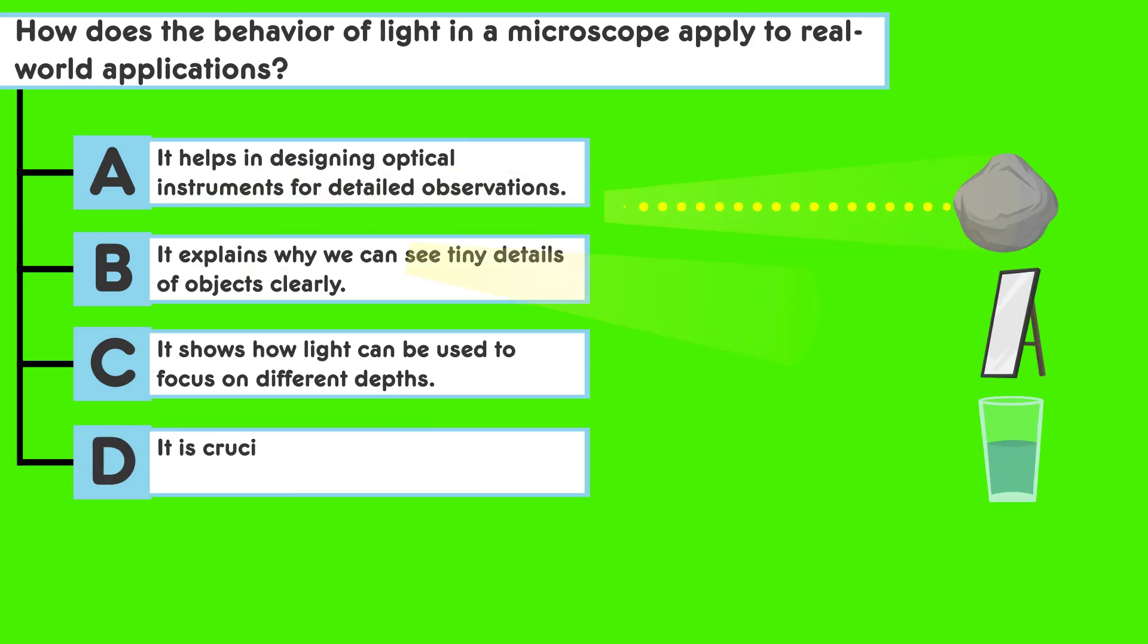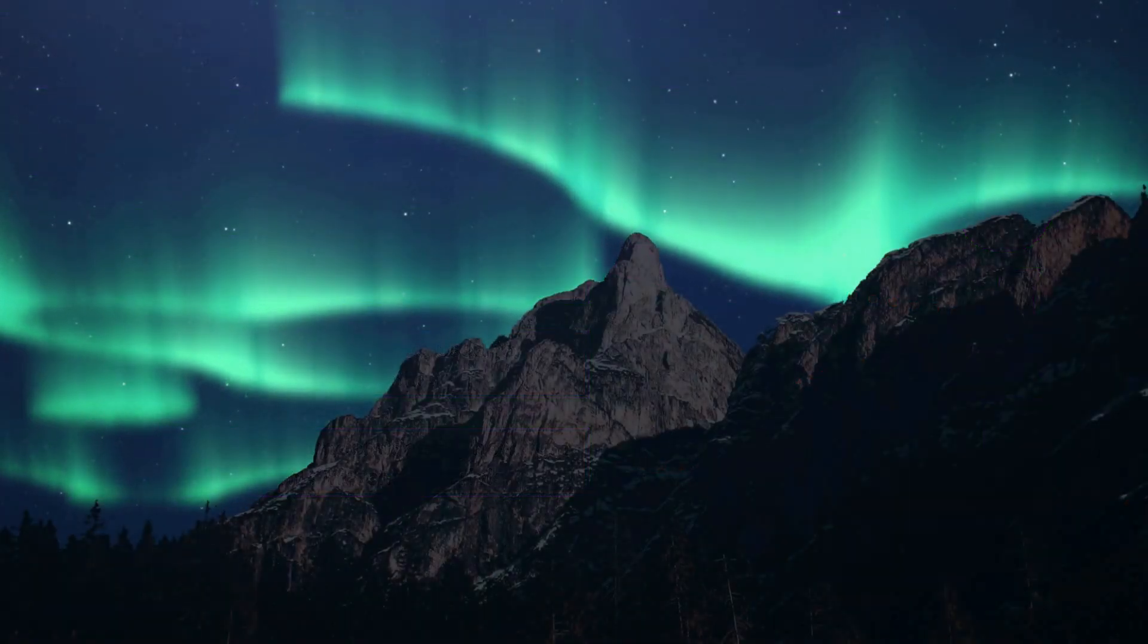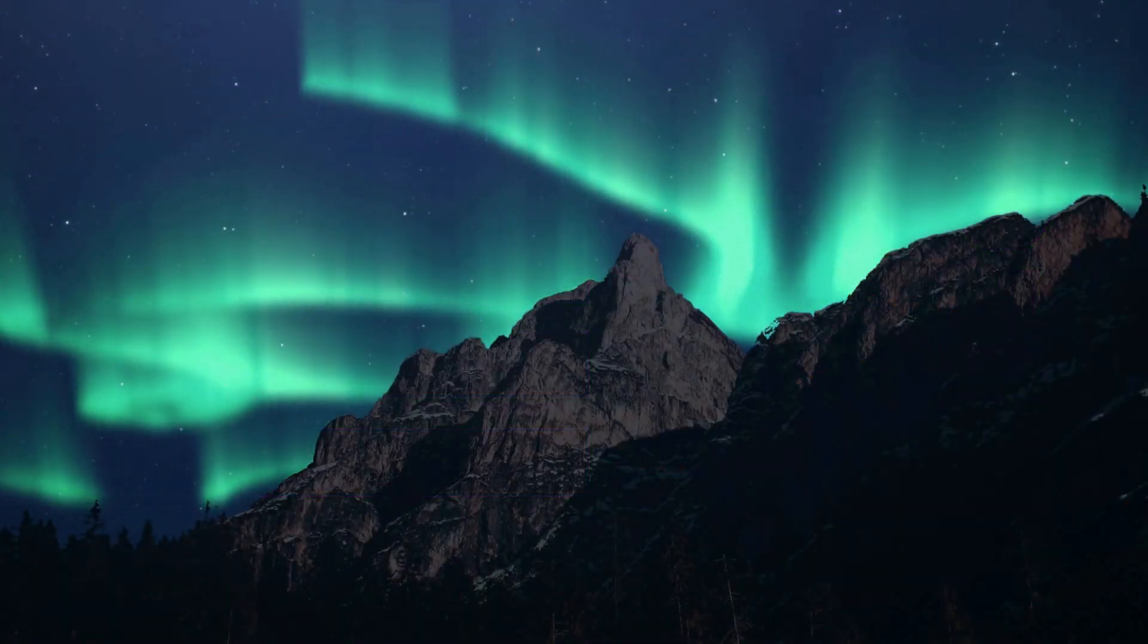Answer choice D: It is crucial in understanding how light interacts with different materials. Think about the broader implications of light behavior in various environments and materials.